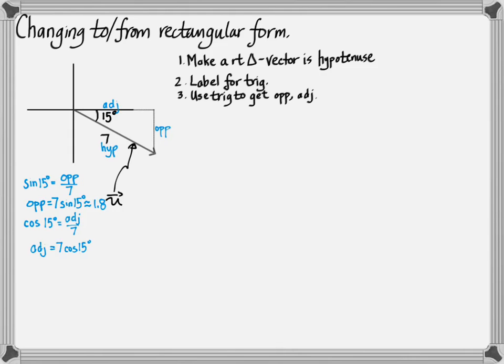Likewise, cosine is adjacent over hypotenuse. Here that's adjacent over 7. So I get 7 cosine 15 degrees or the adjacent is around 6.8.